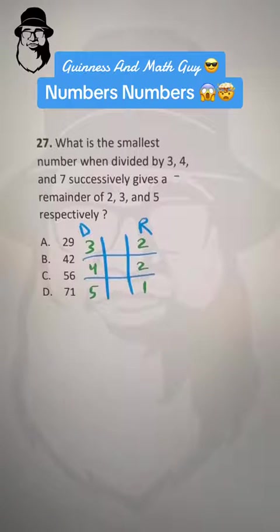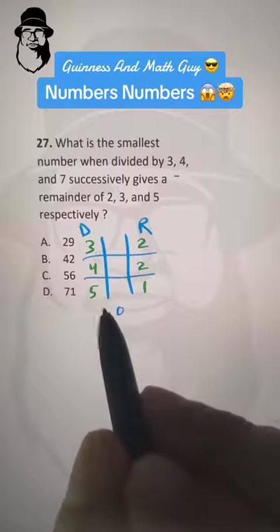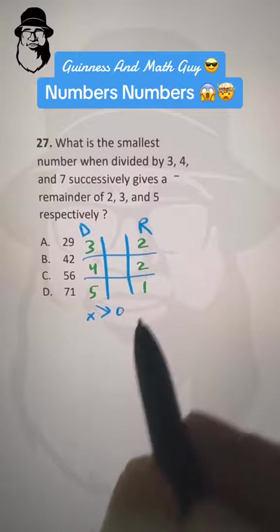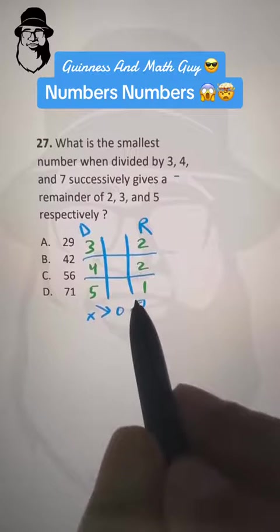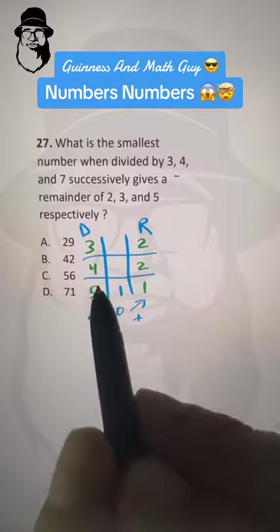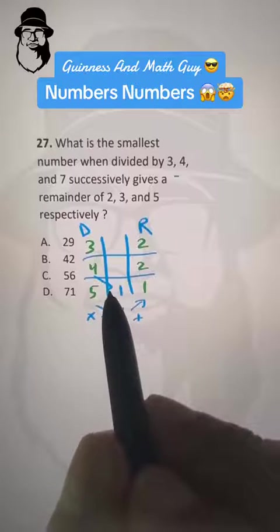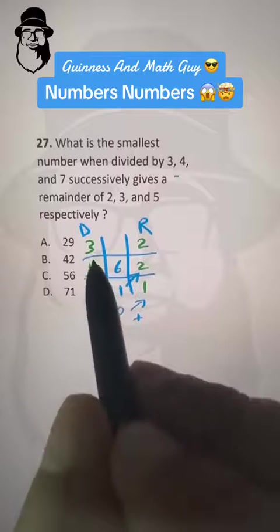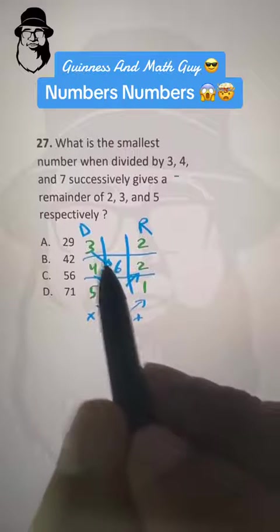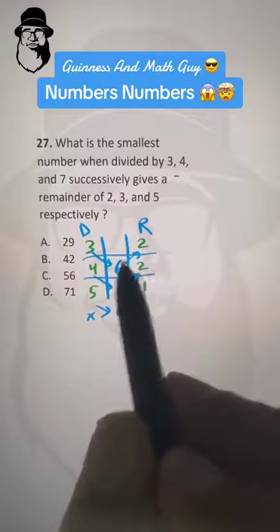So we need the smallest, so we will start with 0. 7 times 0 is 0, then plus 1 is 1. So we will write 1 here. Again, same process. 4 times 1 is 4 plus this 2 is 6. Then again, same process. 3 times 6 is 18 plus 2 is 20.